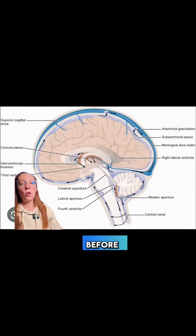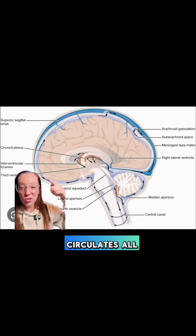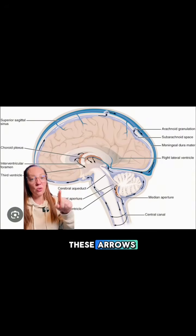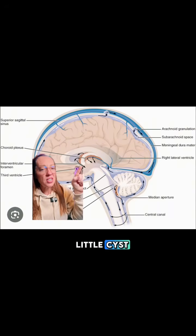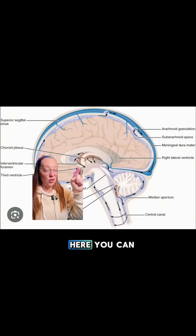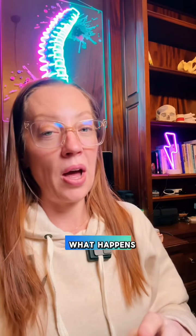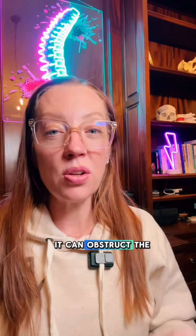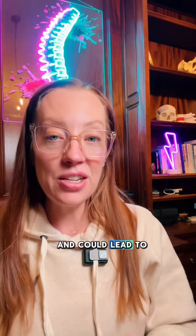We have a ventricular system in our brain where fluid circulates all inside the brain following these pathways, and the third ventricle is right here. If you have a little cyst that obstructs the outflow, pressure can build up, and that's exactly what happens if the colloid cyst becomes a certain size. It can obstruct the way our fluid normally circulates through our brain and could lead to a condition called hydrocephalus.